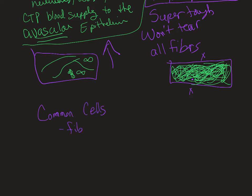With your connective tissues, you've got some important common cells. You've got fibroblasts laying down the fibers. You're also going to have various white blood cells like macrophages floating around. In areolar areas, you might have little clusters of these. You will also occasionally have elastic fibers.